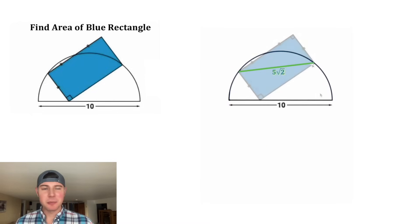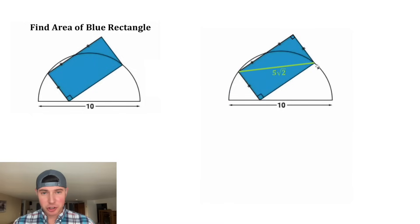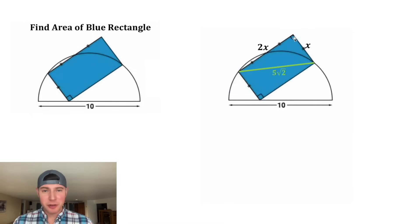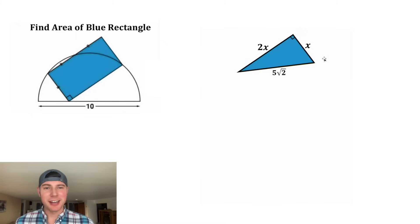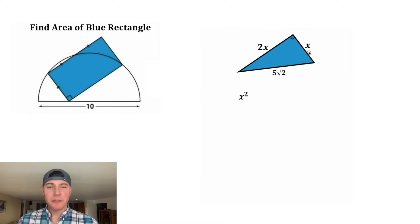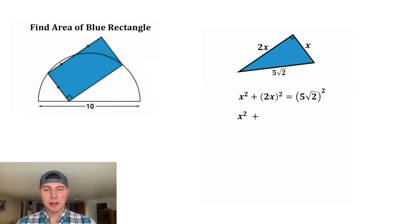We can go back and bring back our rectangle. Looking at our rectangle, if we call the shorter side x, this longer side is going to be 2x, and we have formed another right triangle. Now we can do the Pythagorean theorem to solve for x: we have x² + (2x)² = (5√2)².